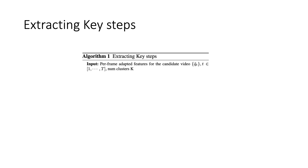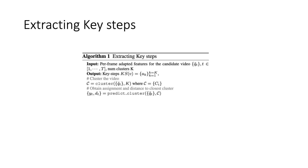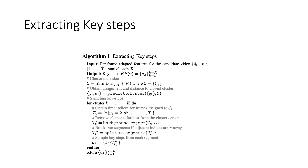Now I'll discuss how to extract key steps. Once we train the models using the loss, we use it to obtain features for an input video. These are then clustered using an algorithm of choice. Next, we obtain cluster assignments and distance to cluster center for each step. Finally, we extract the required number of key steps from each cluster through sampling.